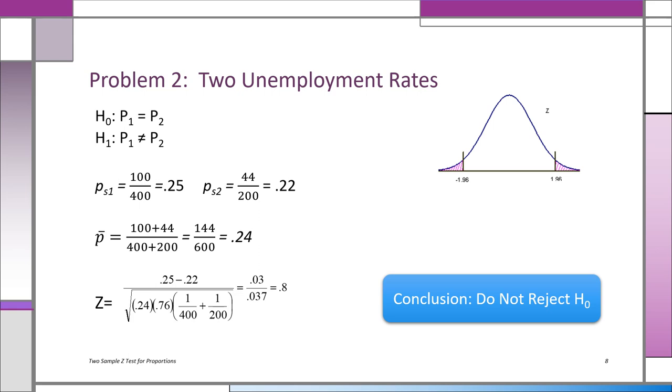So our conclusion is: do not reject H0. The two unemployment rates are different, but the difference is only due to sample variation. It could happen with any two samples, even from the same county.